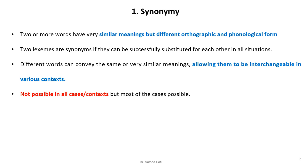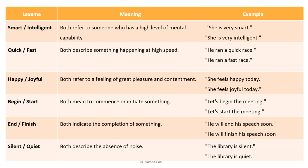First, we will discuss synonymy. Two or more words have very similar meaning but different orthographic and phonological form. Two lexemes are synonyms if they can be successfully substituted for each other in all situations. Different words can convey the same or very similar meaning, allowing them to be interchangeable in various contexts, though not possible in all cases.